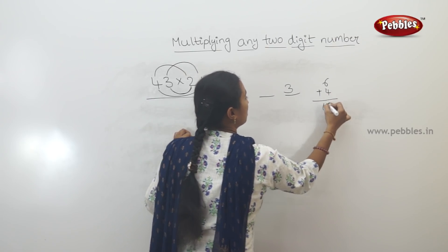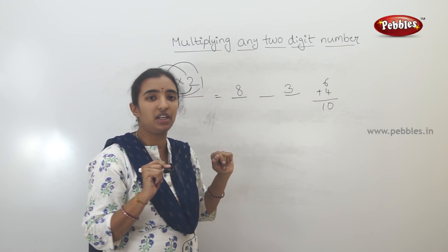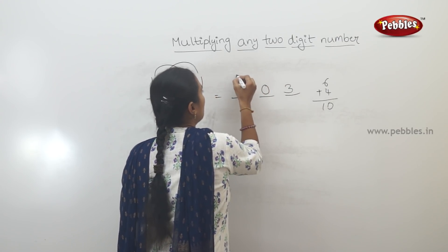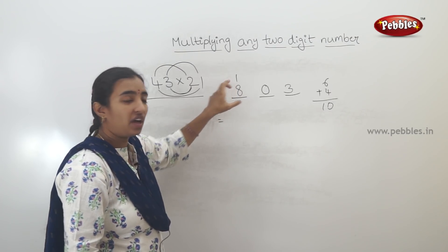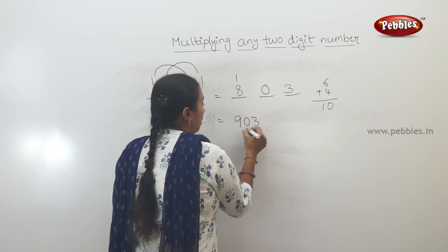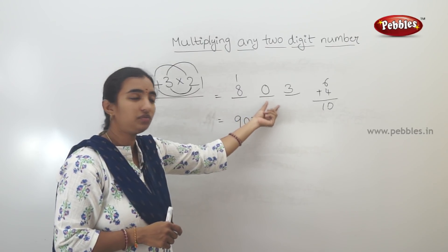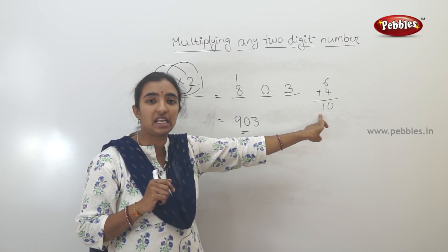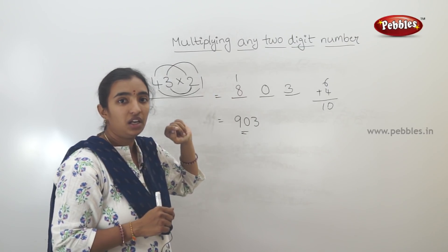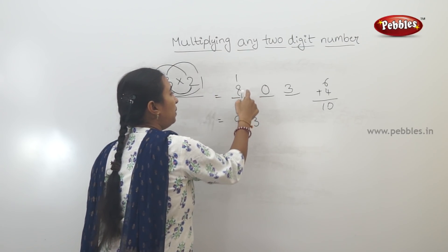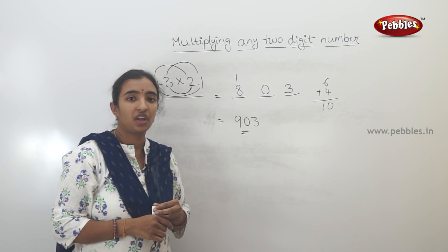6 plus 4 is 10. So 10 is a two-digit number. Write 0 here and carry the 1. Then 8 plus 1 is 9. So the answer to 43 into 21 is 903. This is the shortcut.